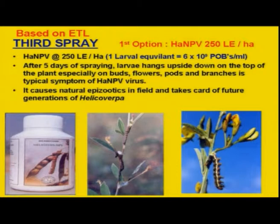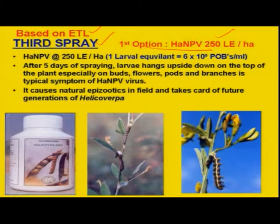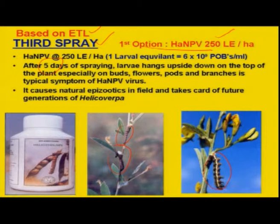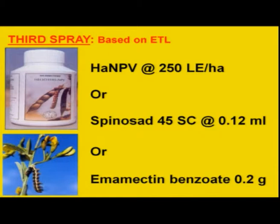Based on the economic threshold level again, a third spray is recommended. As the first option, spray the microbial insecticide Helicoverpa NPV at 250 larval equivalents per hectare. After five days, a large number of fully grown larvae will be seen hanging from the top of the plant — these are virus-infected larvae. Those larvae can be collected, crushed, and the suspension further sprayed either solely or in combination with any insecticide for more effectiveness. If NPV is not available, two more safe insecticides — greener molecules — are recommended at very low dosage.